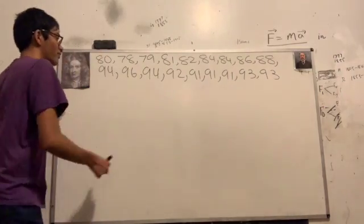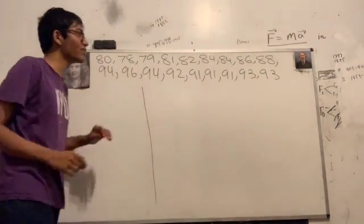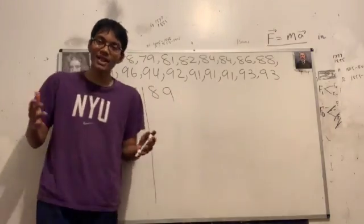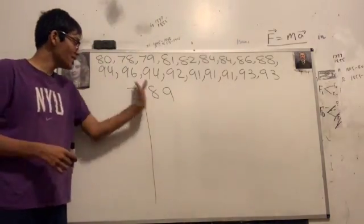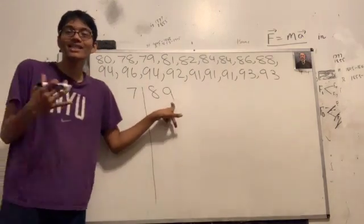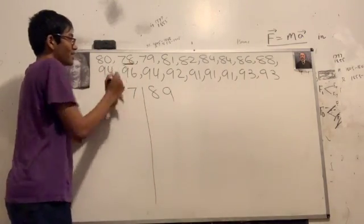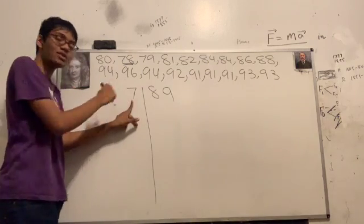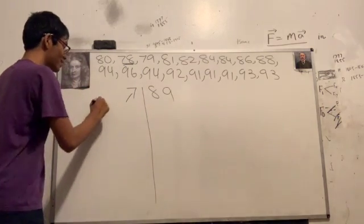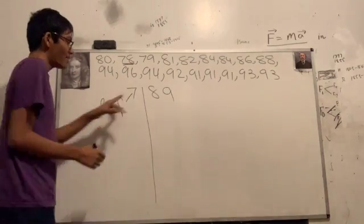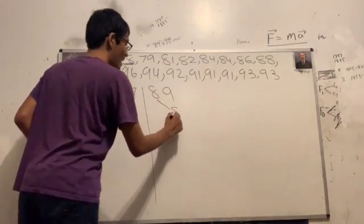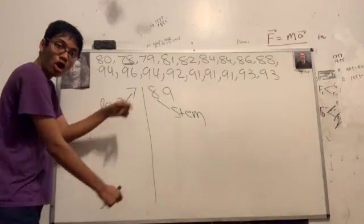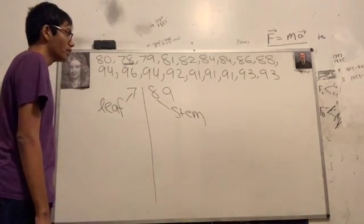For example, a stem and leaf display would display this data as such. What did I just do? I wrote 7 long bar 8 9. What does that mean? Well, look at this data point. 78. I represented it by using 7, which is the 10's place. I made it my stem. This 10's place is my stem. And my 8, my 1's place, I made it my leaf. And my stem and leaf, they're separated by this long bar.